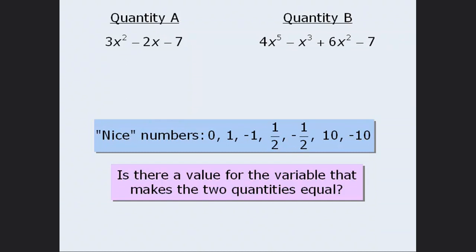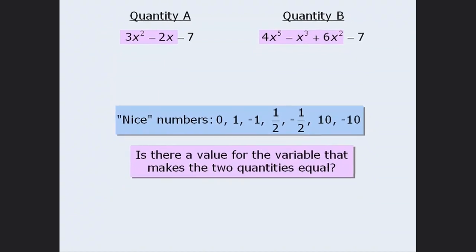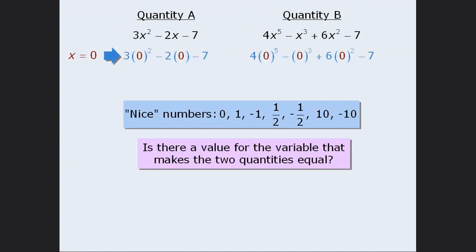Notice that when we examine the question here, we see that both expressions have a constant term of negative 7, and the remaining terms all have x's in them. So we can make all of these terms evaluate to be 0 if we let x equal 0. If x equals 0, then we'll plug 0 into the two quantities and evaluate them to get the following. So when x equals 0, the two quantities are equal.